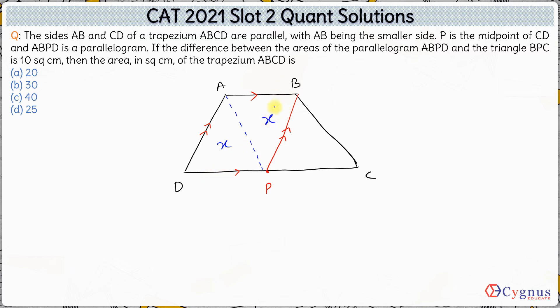Also, we know that if a triangle and a parallelogram have the same base and the same height, area of parallelogram will be twice the area of triangle. If you look at this parallelogram ABPD and the triangle BPC, their bases are equal. DP is equal to PC. The base is equal.